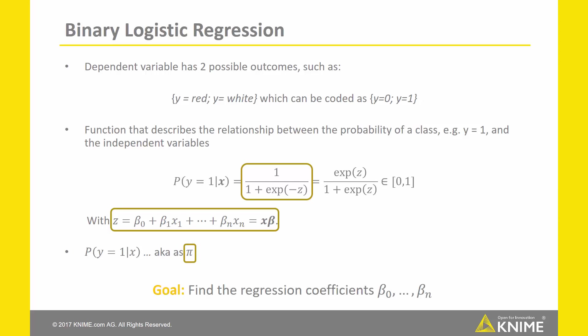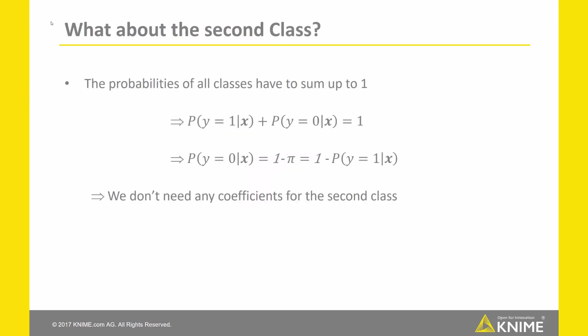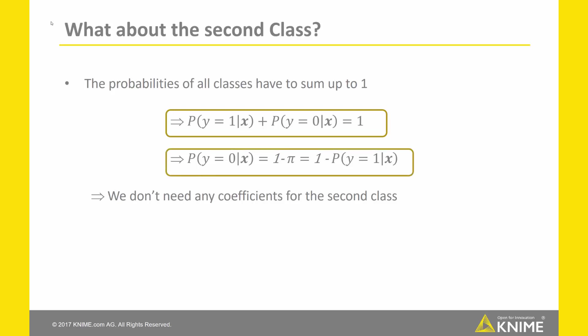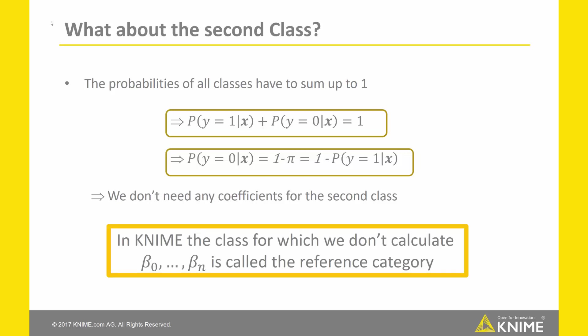Our goal is to find the regression coefficients for the given probability function. But what about the second class, coded as 0? By definition, the probabilities of all classes must sum to 1. In the binary case, the probability of Y equal to 1 plus the probability of Y equal to 0 must equal 1. Consequently, we can calculate the probability of the second class as 1 minus the probability of the first class. Therefore, we don't need any coefficients for the second class. In KNIME, this class is called the reference category and is coded as 0.